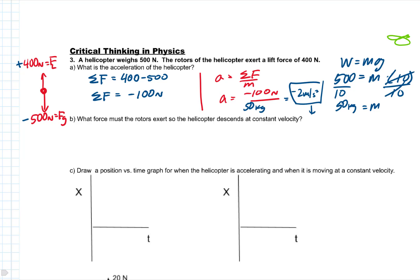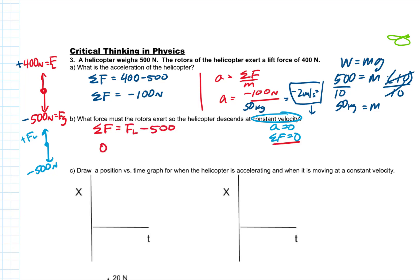If I want to fly at constant velocity, I still have the weight of 500 newtons down and an unknown lift force up. Because it's constant velocity, acceleration is zero and net force is zero. Net force equals lift minus 500 newtons, and since net force is zero, zero equals lift minus 500. Therefore the force of lift must equal 500 newtons.